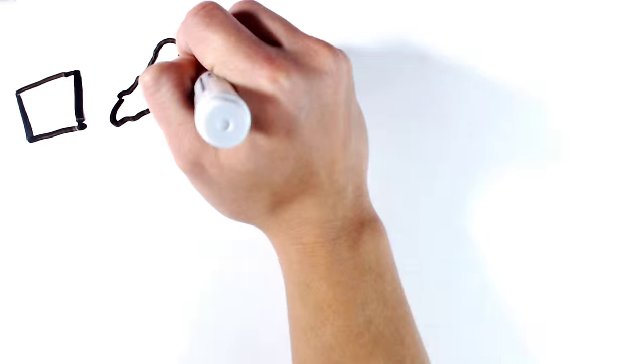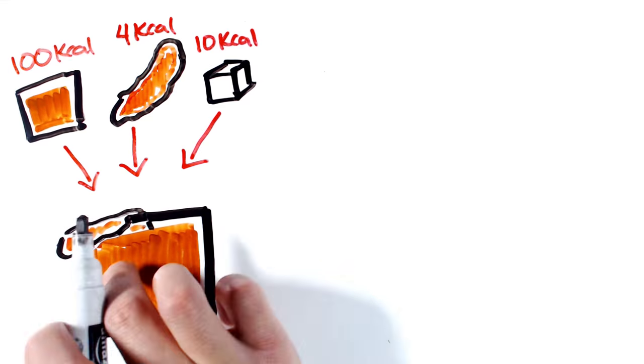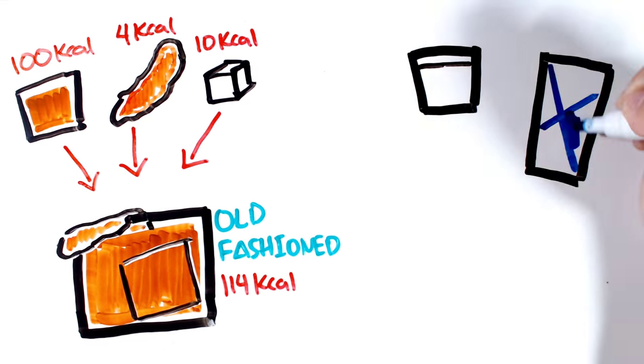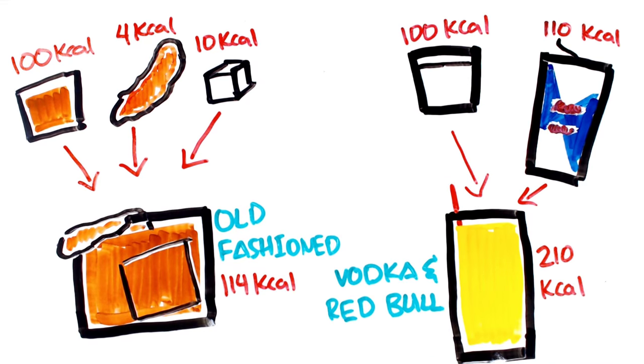Usually, the best diet conscious choices are the ones with the least ingredients added. An old fashioned, which only has one sugar cube and some bitters added, will get the vast majority of its calories from the whiskey itself. A Red Bull and vodka on the other hand gets most of its calories from the added energy drink, which pushes its calorie total quite high.